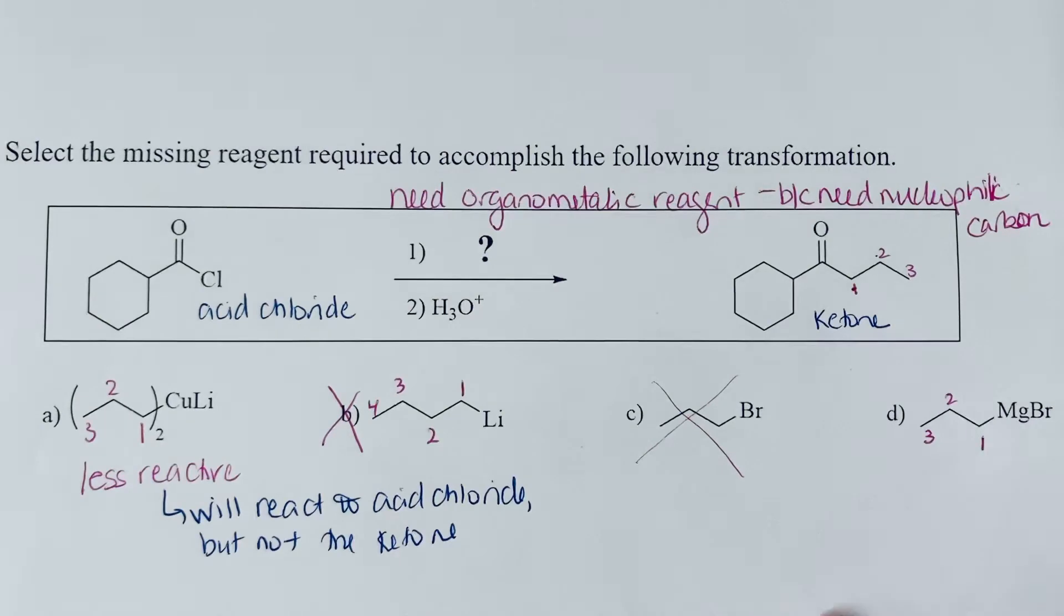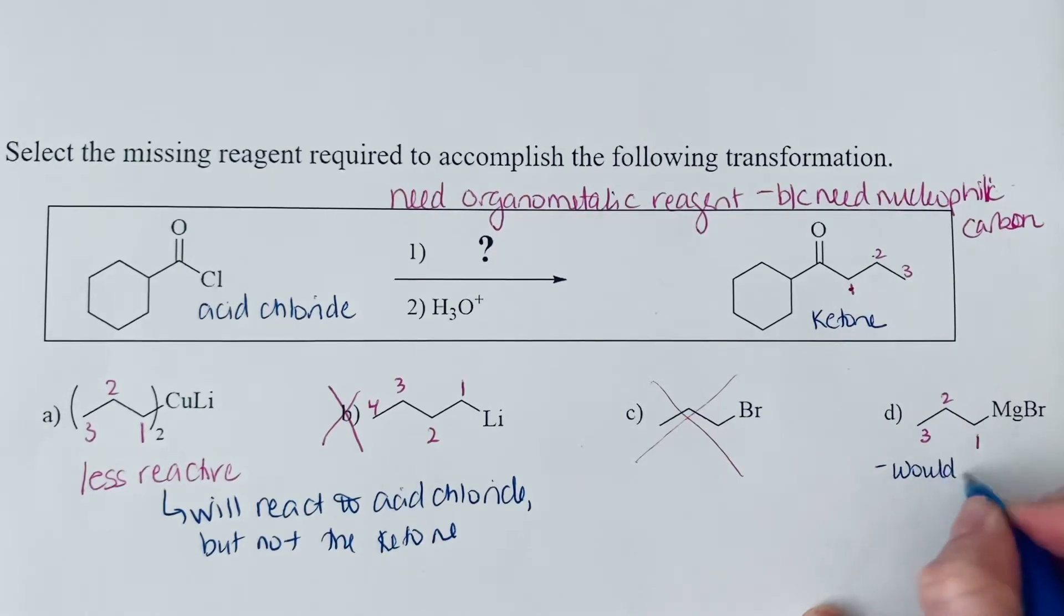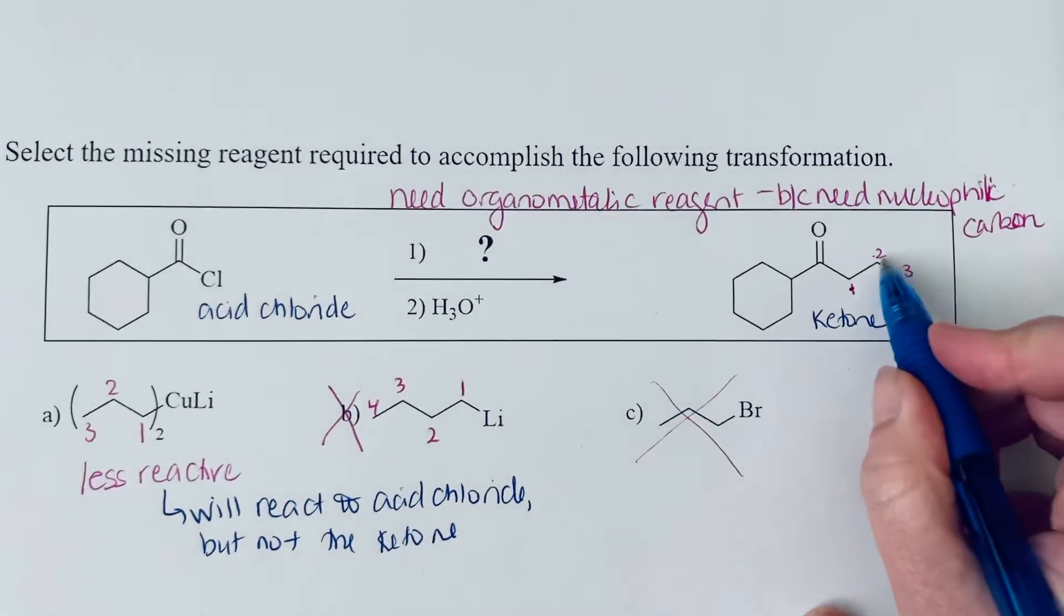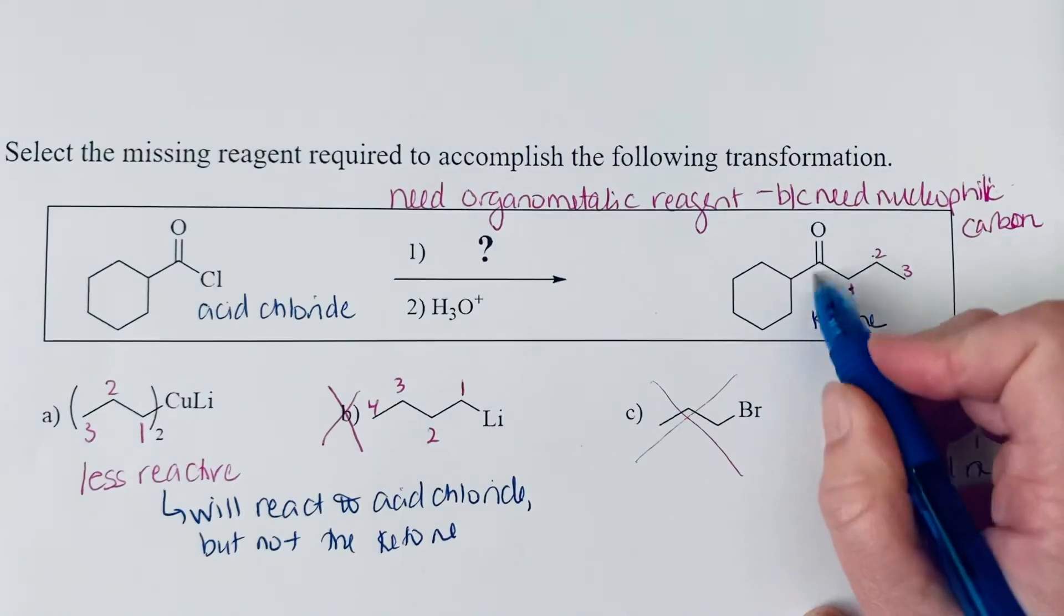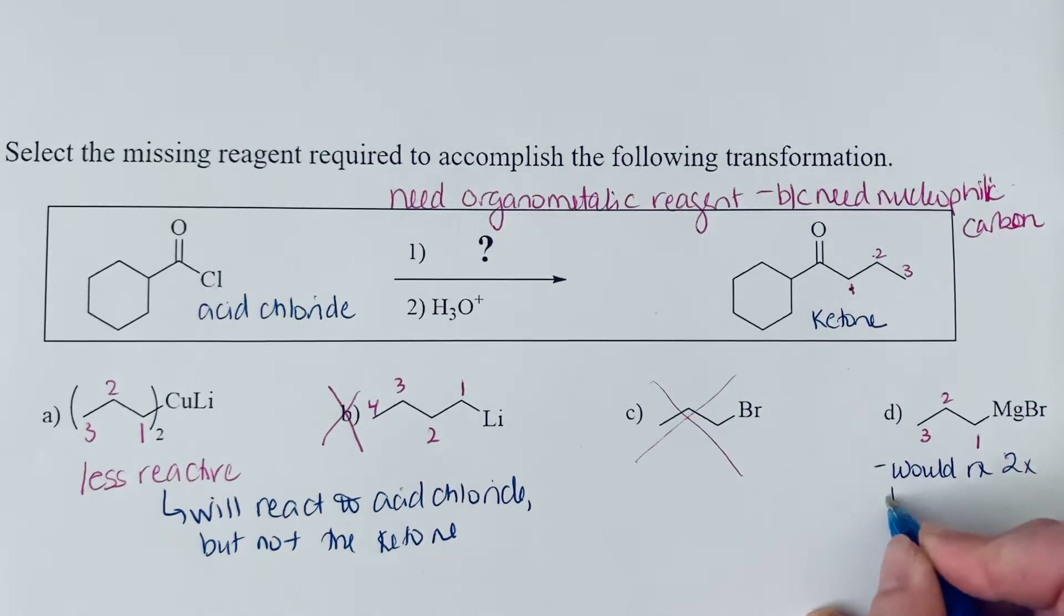So a Grignard reagent would react twice with the acid chloride, and it would actually end up giving you the tertiary alcohol. So you would add another one of these propyl chains, and then it would react two times to give the tertiary alcohol.